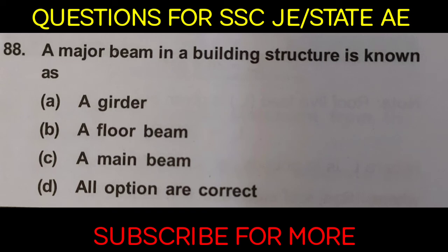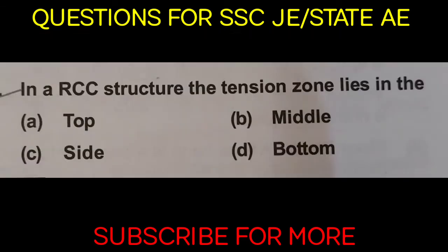First question: a major beam in a building structure is known as what? The name of the major beam is the girder, or floor beam, or main beam. So option D will be correct.